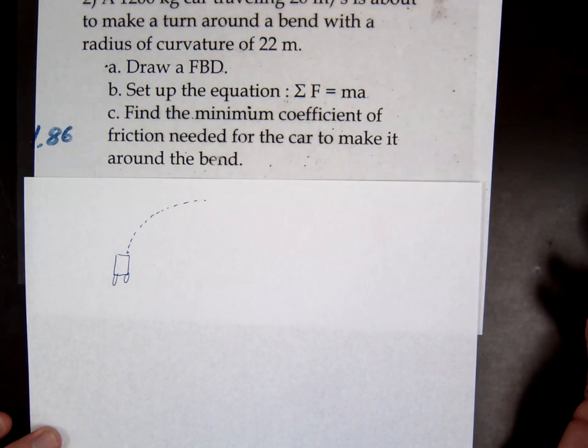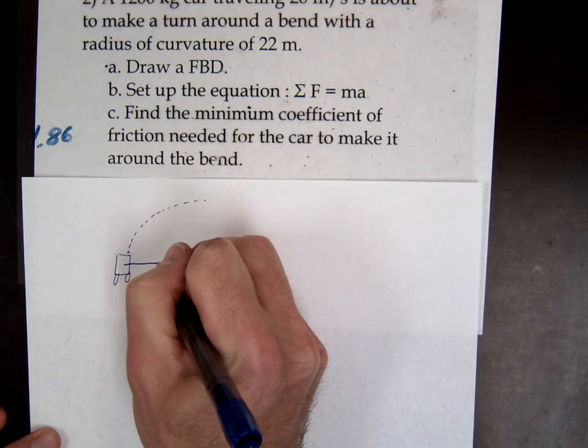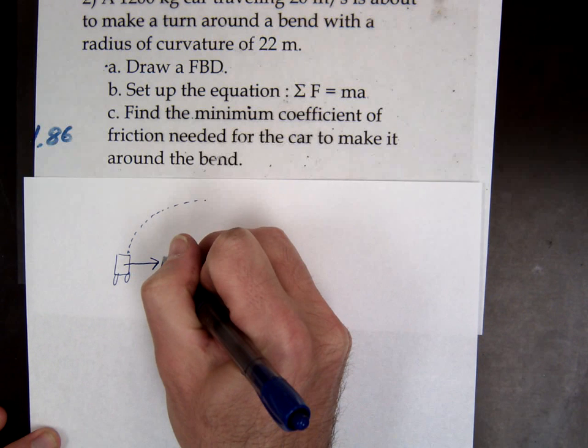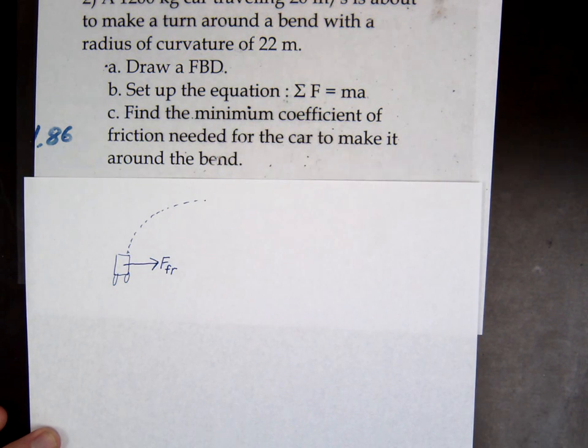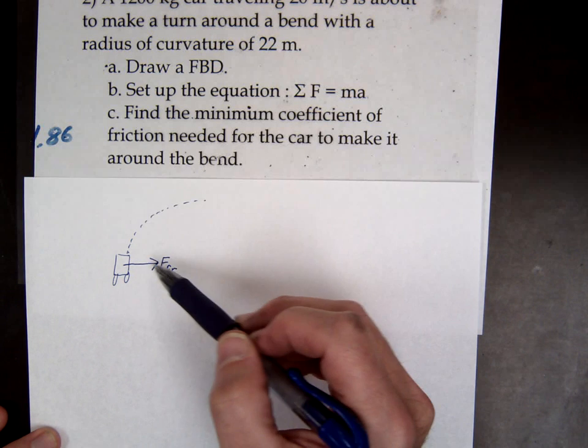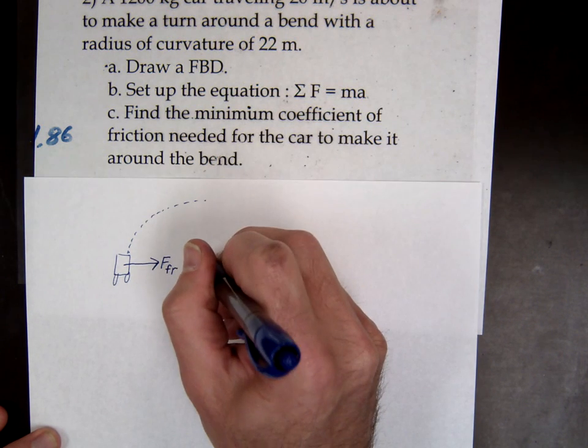If you were driving on ice, if you try to turn on ice, it's going to be challenging to make that turn. So we have the force of friction. Remember, our forces that keep us in a circle are always towards the center of our circle.